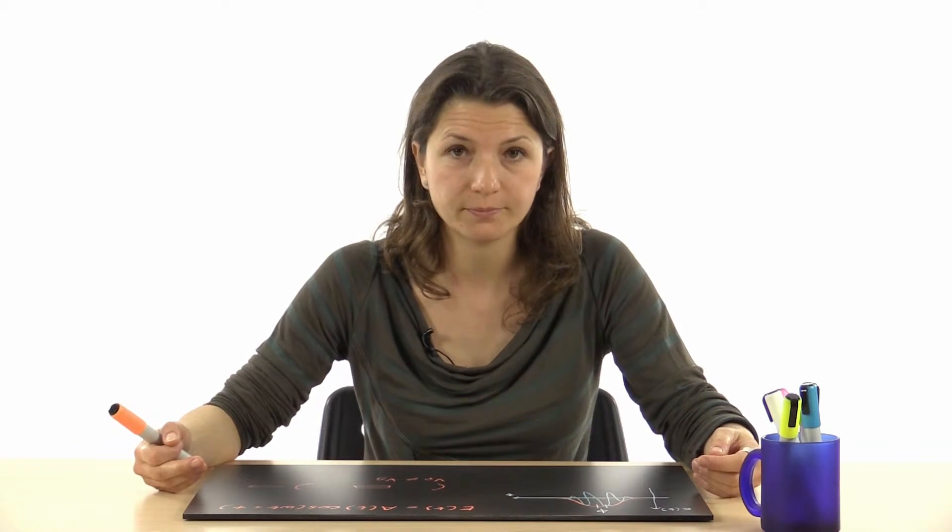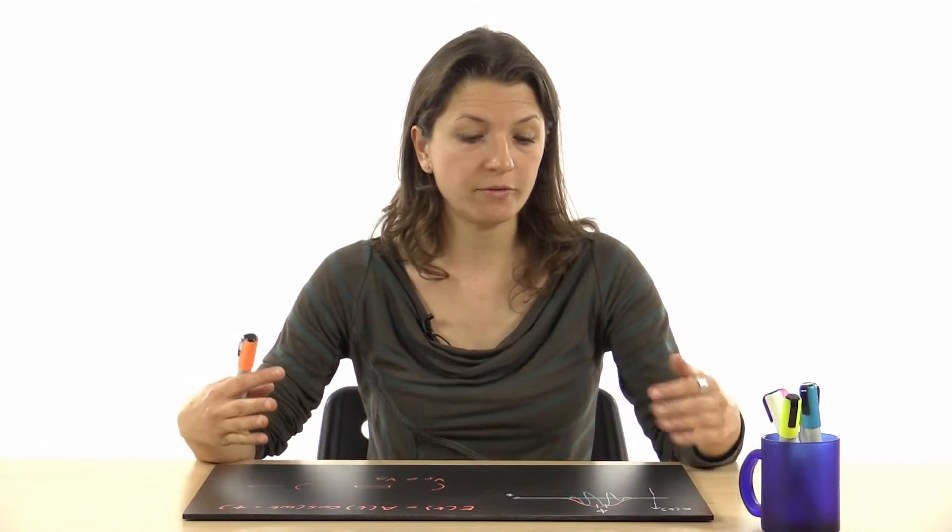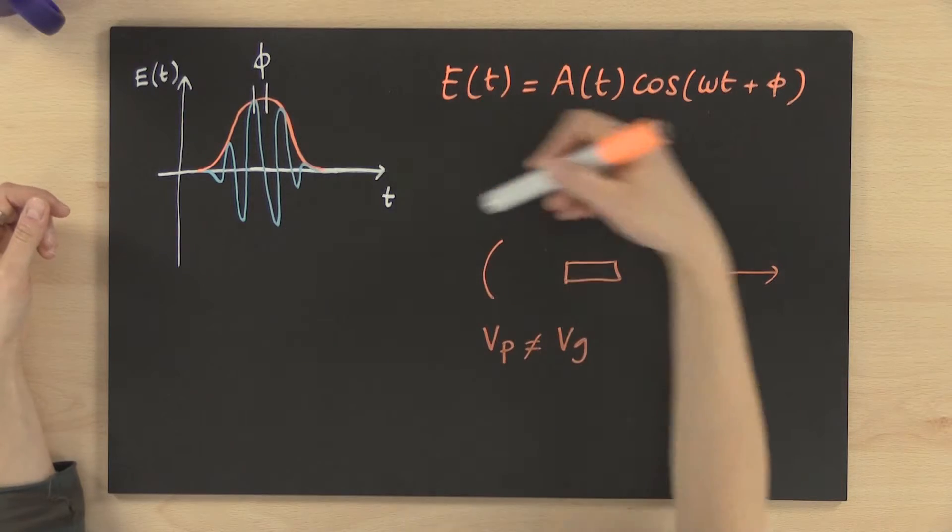The carrier envelope phase of a light pulse is very important in all phenomena in which the dependence is directly on the electric field and not on the amplitude of the pulse. This applies to very short pulses, for example in all strong-field experiments and in the production of isolated attosecond pulses. For these experiments, we need to stabilize the value of the carrier envelope phase to have a reproducible electric field.